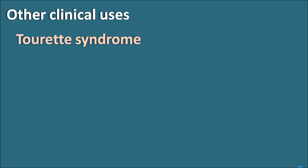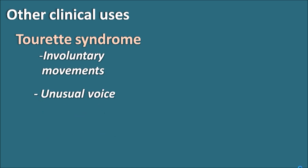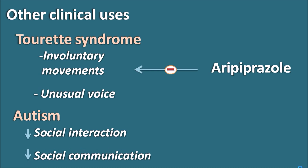Aripiprazole can also be used in Tourette syndrome, which includes involuntary movements as well as the production of unusual vocalizations. These involuntary movements can disturb the vocal cords, producing unusual voice. Aripiprazole is used to block these involuntary movements. Another use is in autism, which involves reduced social interaction and communication, particularly observed in children. Aripiprazole is approved to treat autism in children. Overall, aripiprazole is a drug with a unique mechanism, acting as a partial agonist — an antagonist on one receptor and an agonist on another — with less extrapyramidal side effects, and it is used in bipolar depression, Tourette syndrome, and autism.